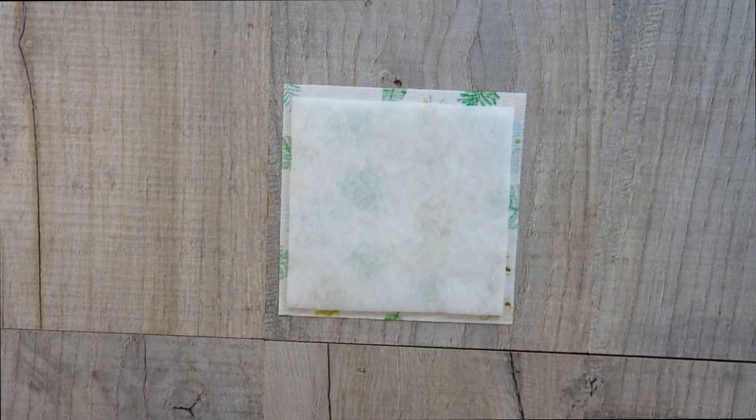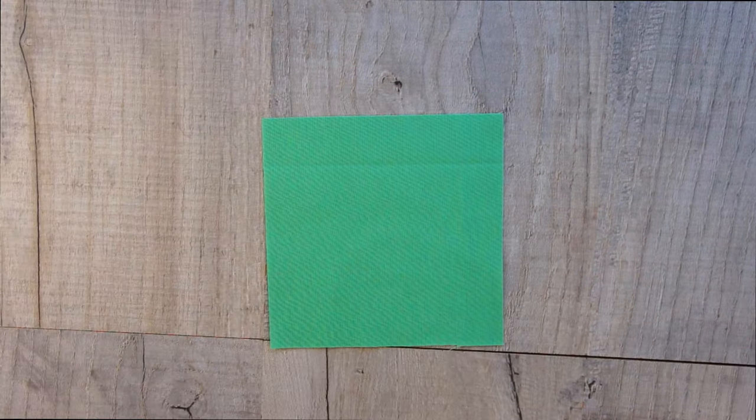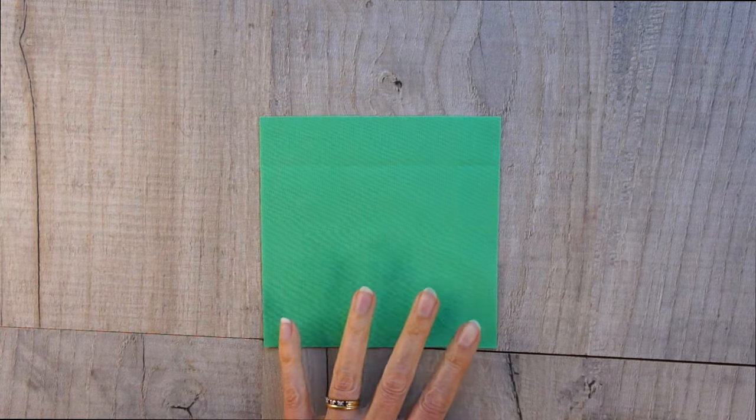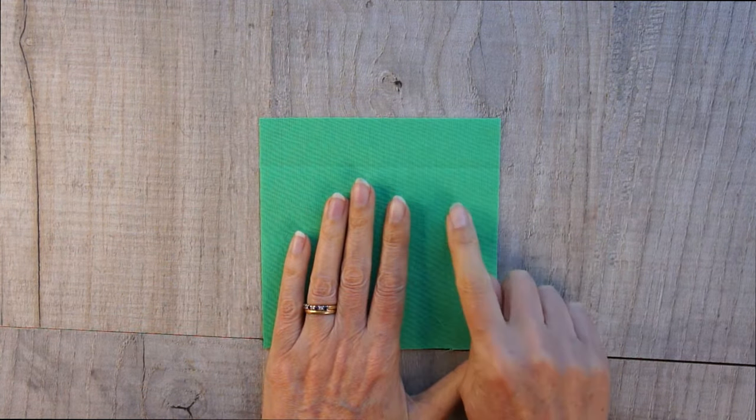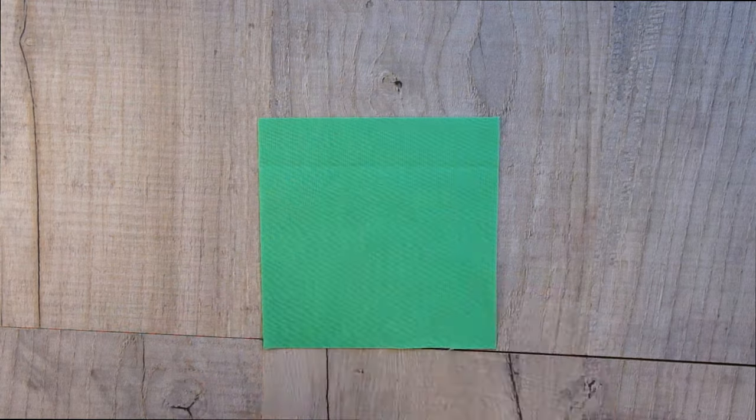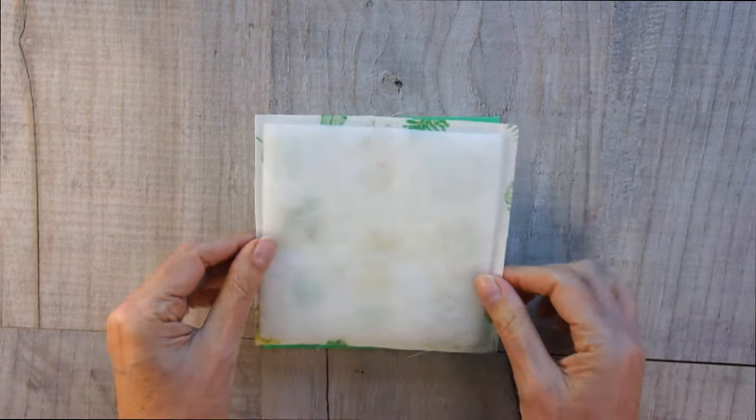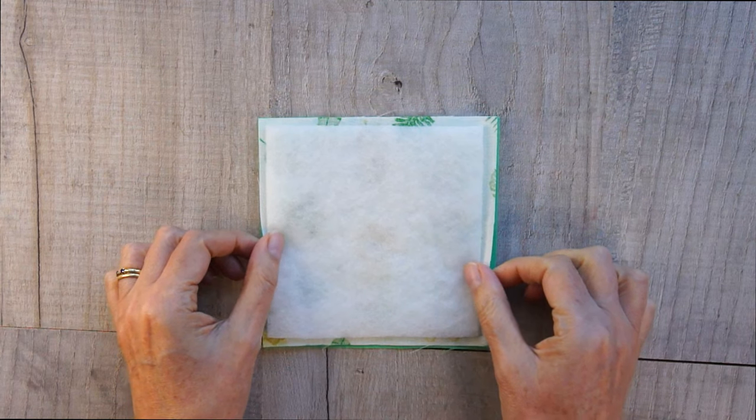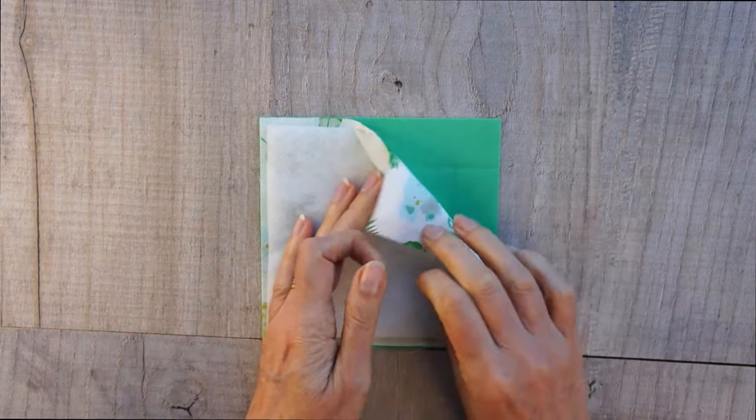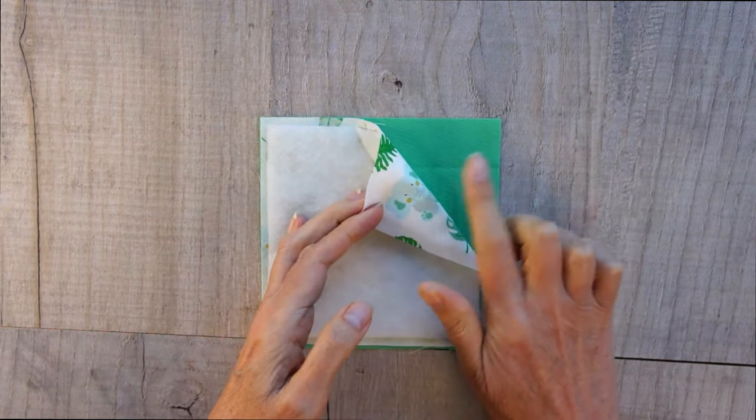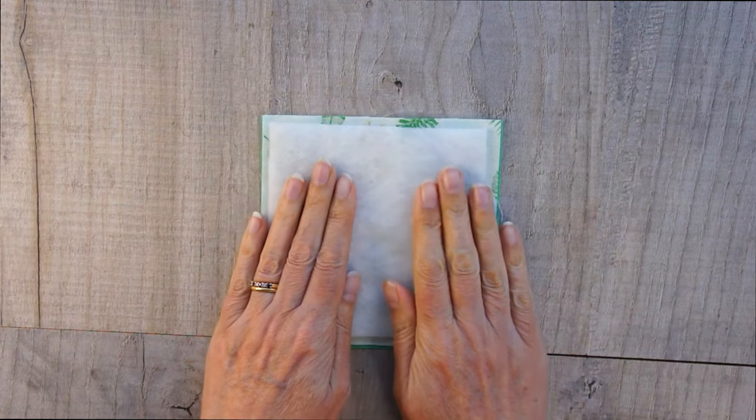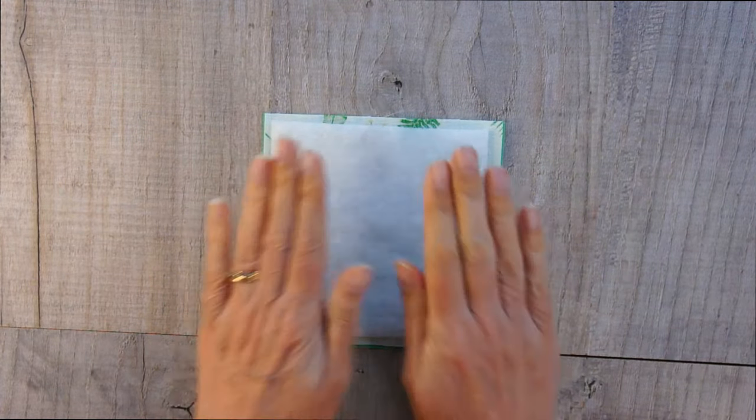So, attach your fusible fleece either by glue or by tacking it on. And then take a piece of fabric for your bottom of your mat and place it right side up. And then bring your other piece that has your fusible fleece attached and place that right side down. So, you've now got right sides together, ready to sew them together.